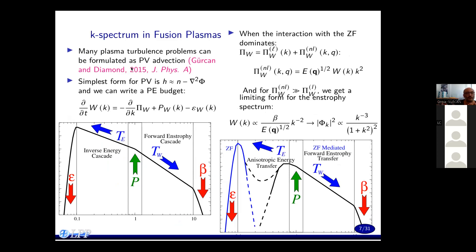K-spectrum in fusion plasmas is the topic of this talk. Many plasma turbulence problems can actually be formulated as potential vorticity advection problems. We can make some general arguments based on this fact. The simplest form for potential vorticity is we can write it as n minus del-squared phi, where del-squared phi is the vorticity and n is density. We can write the potential enstrophy budget, which has a divergence of a flux in k-space form, plus production and dissipation.